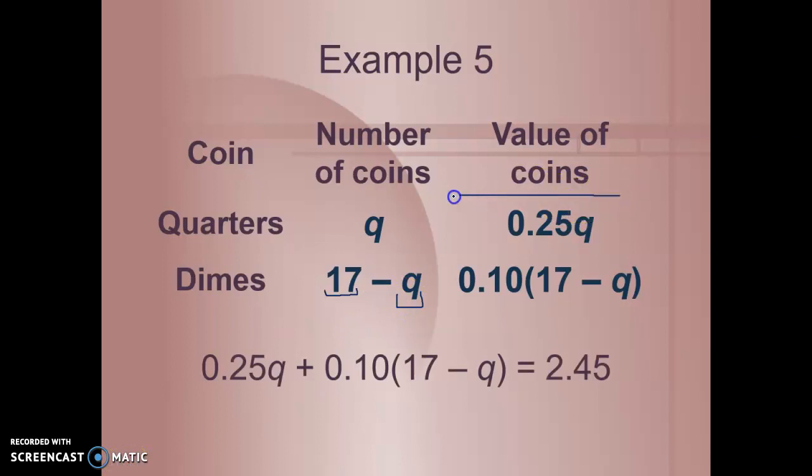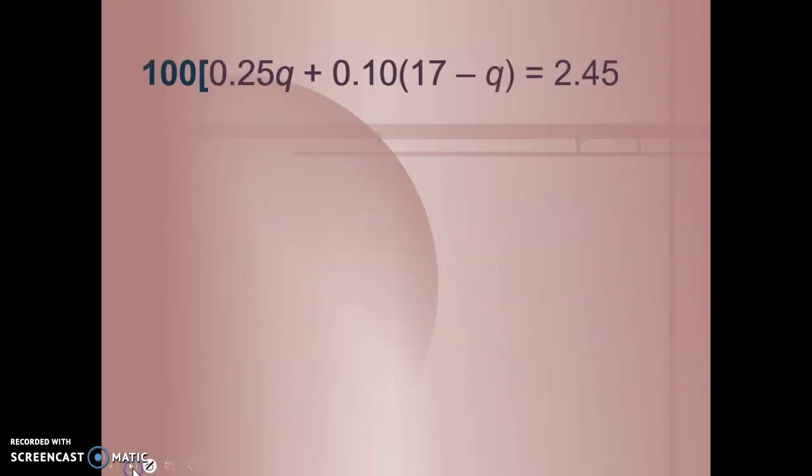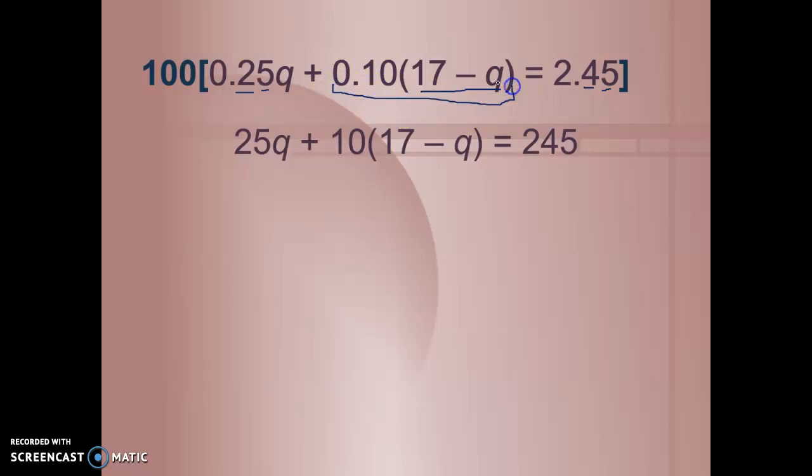We know that the total value of the coins is $2.45. So we're going to add these two things together to get $2.45. Using the distributive property, we're going to simplify that equation and combine like terms. But first, let's get rid of our decimals. My biggest decimal goes to the hundredths place, so I'm going to multiply by 100. I get 25Q plus 10 times 17 minus Q equals 245. We did not multiply this by 10—this is one whole term for the moment, and we're just going to multiply that leading coefficient by 10.